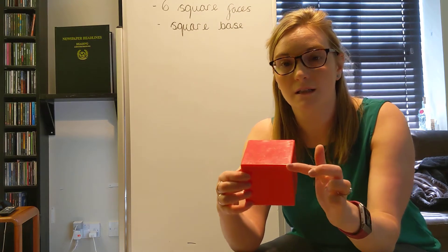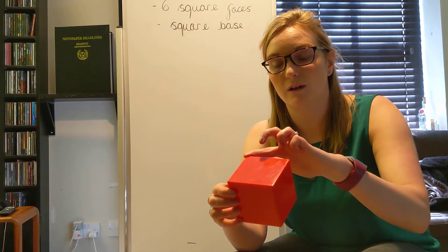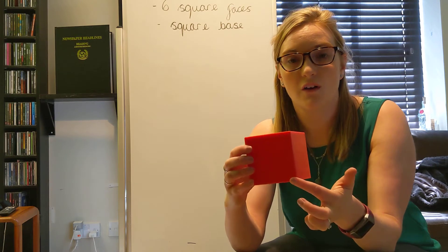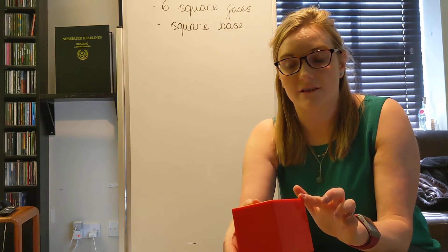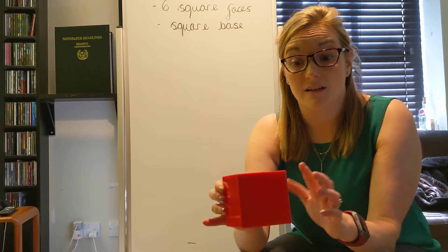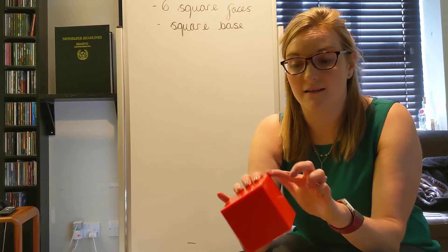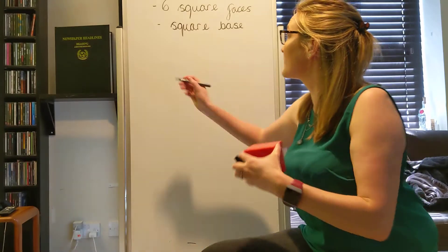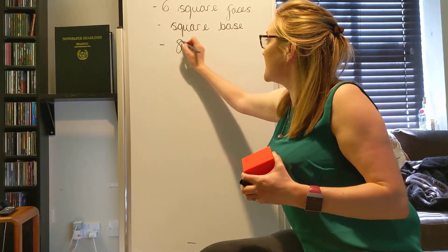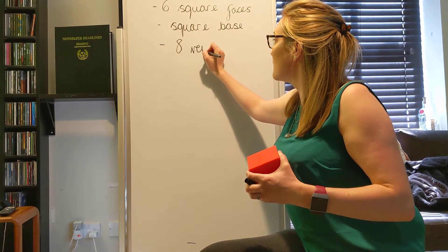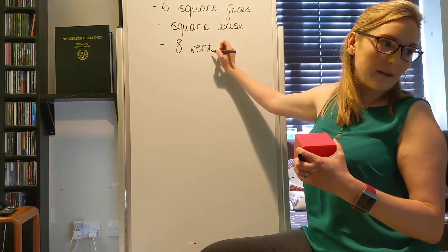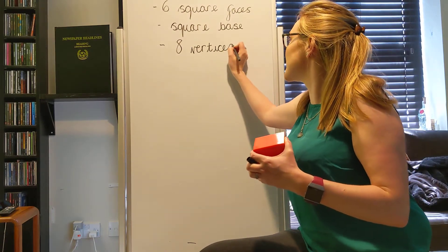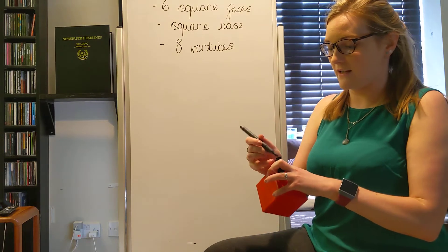So let's count the vertices on there here. So we've got one, two, three, four, five, six, seven, eight. So there's eight vertices on the cube. Let's pop that on. Eight vertices.